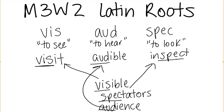So remember, we have three Latin roots we're talking about this week: v-i-s means to see, a-u-d means to hear, and s-p-e-c means to look. I hope this video helped you understand a little bit more about Latin roots. Thanks for watching. Bye!